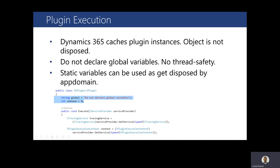Regarding plugin execution, Dynamics 365 caches plugin instances so it can serve parameters from cache within a certain time limit rather than going to the server. Because of this, the object is not disposed between calls. If you are planning to use a global variable within the plugin, it is not thread-safe — do not declare a global variable. You can use static variables, which will be disposed by the app domain. We always recommend: do not use global variables inside the plugin.